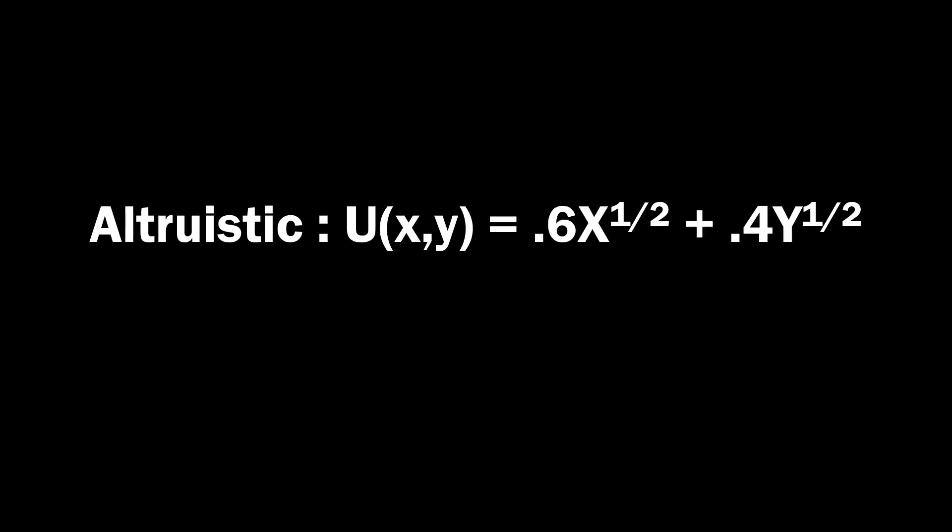This is going to be in contrast to social preference theories that have other regarding utility functions like this altruistic one shown here. Others attainments are also a part of your utility function. You're not just concerned with the payoffs to yourself, X, you're also concerned with the payoffs to others, Y. So here the altruistic payoff, what do we have? We have, well, you know, X is payoff, my payoff.